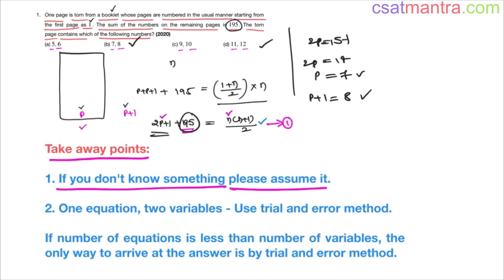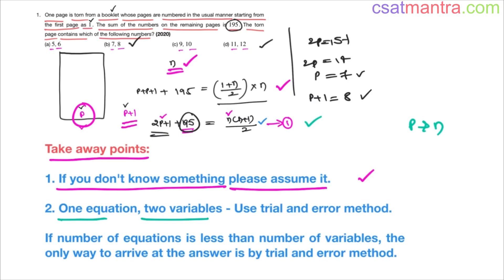The takeaway from this problem: if you don't know something, assume it. UPSC aspirants often struggle because they don't assume variables. Mathematics doesn't work without forming equations. Here, we assumed the torn page number as p and the total pages as n, formed one equation, then realized we had one equation and two variables — so conventional solving doesn't work.